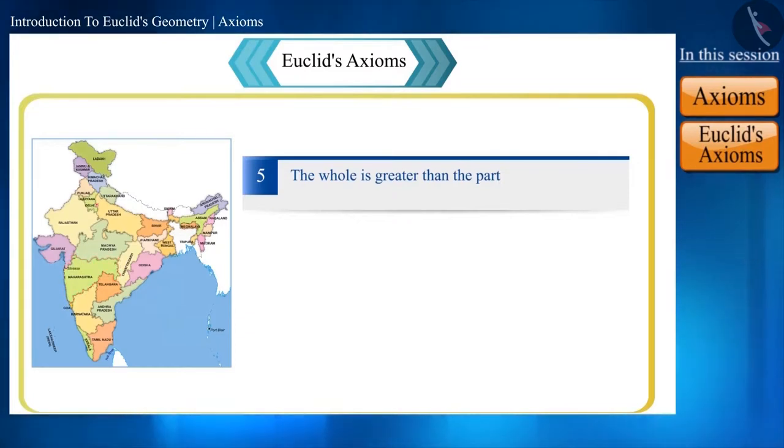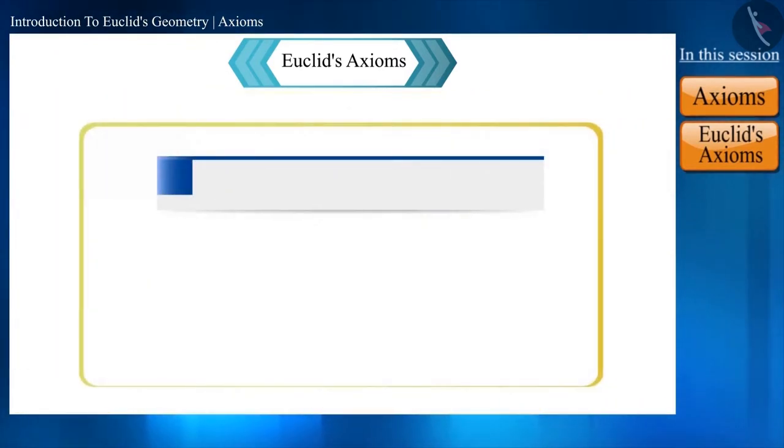Yes friends, Euclid said the same thing in his fifth axiom: the whole is greater than the part. If we consider India as a, Maharashtra as b, and the remaining 27 states as c, then we can write a as somewhat like this: a equals b plus c.